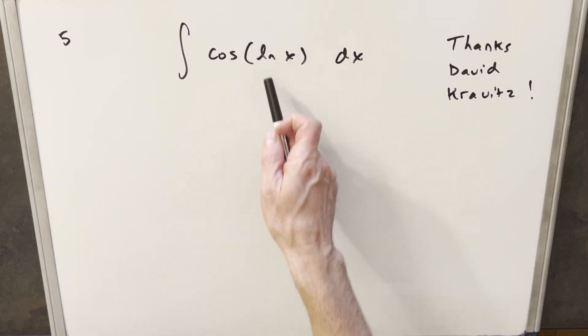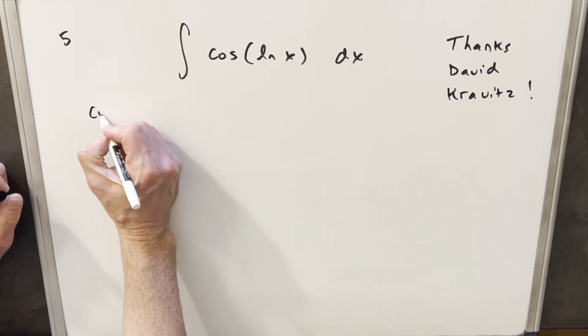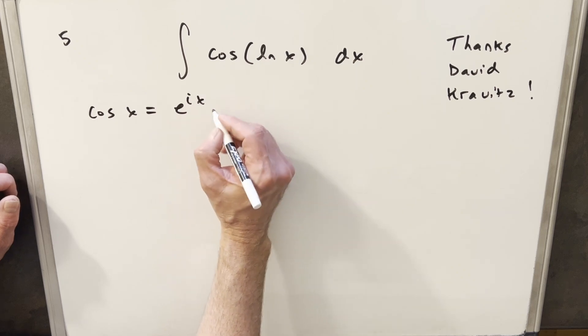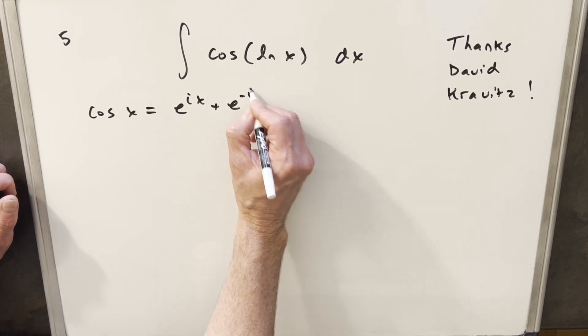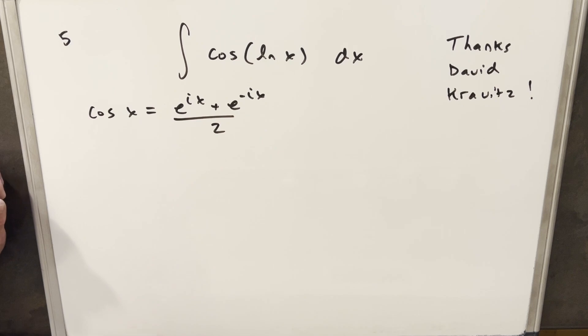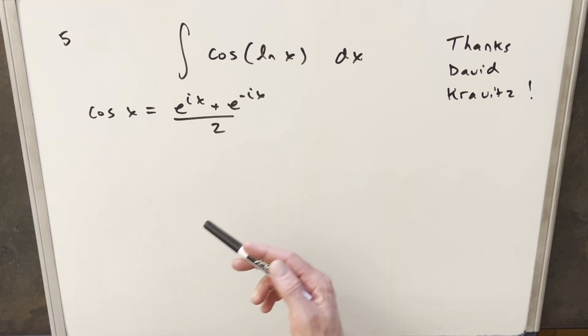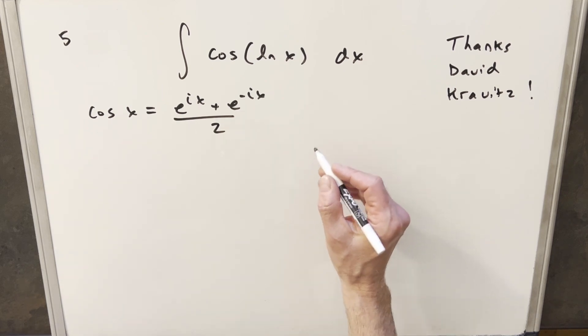So before we get into cosine ln x, let's just look at the complex definition for cosine x. We can write this as e to the ix plus e to the minus ix all over 2. We could plug ln x in here and integrate, but I think it's going to be easier if we do it a different way and use Euler's formula.